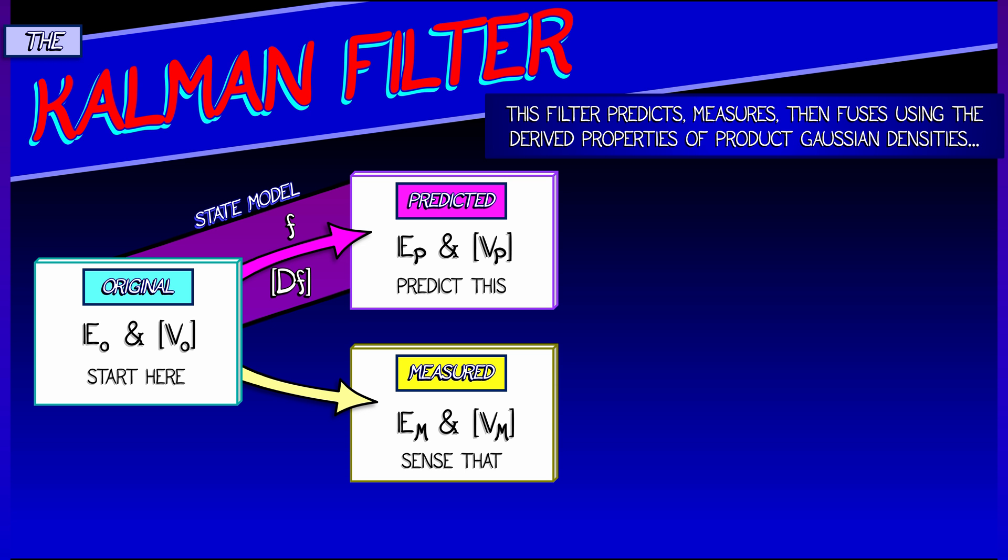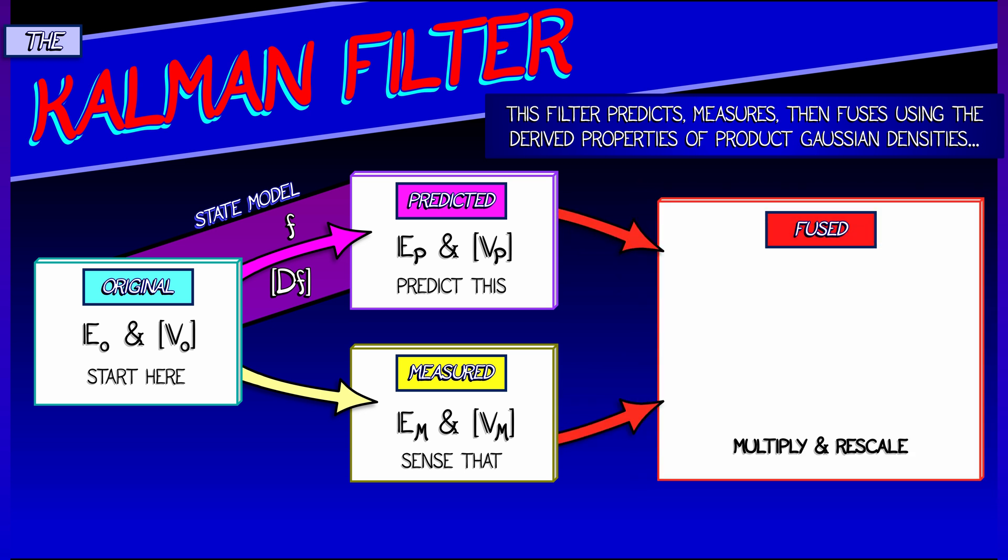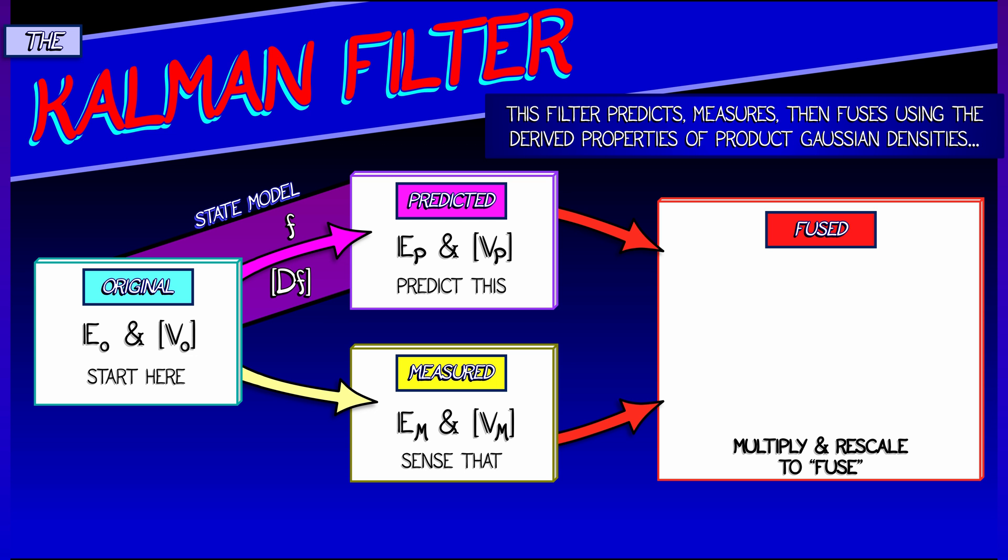Now, how do we reconcile what was predicted and what was measured? We fuse them together, multiplying and then rescaling in order to get a new expectation, E f.